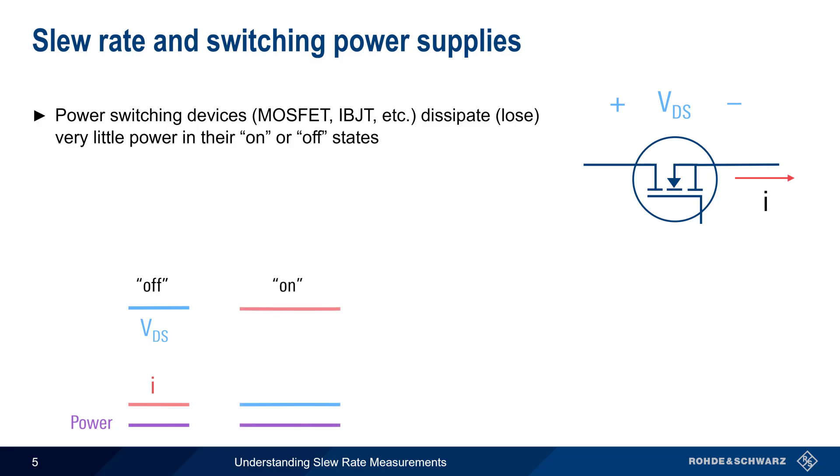Conversely, in the on or conducting state, there is zero voltage drop across the switch. And thus, the product of voltage and current is again zero, meaning no power loss.